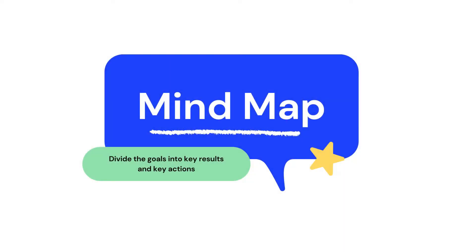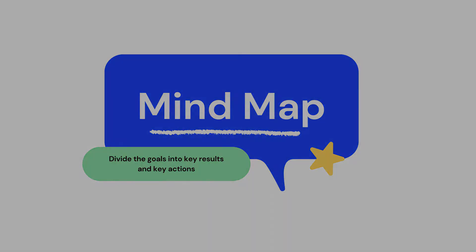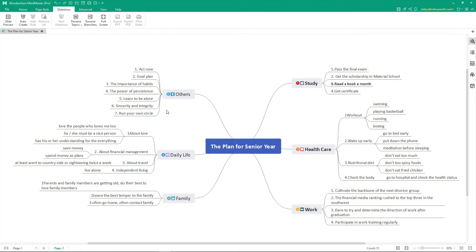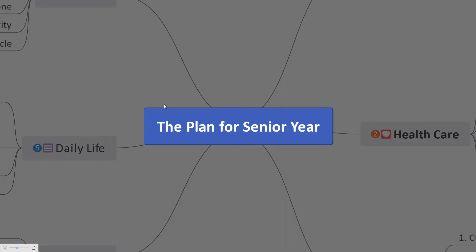Now let's see how we can use a Mind Map to divide the goals into key results and key actions. Here's the Mind Map of the to-do list. The objective has been broken down into key results, and the key results in turn have been divided into key actions. To understand the Mind Map in detail, let's take an example: a student's plan for senior year. To achieve this objective, six different tasks have been identified along with detailed key actions.